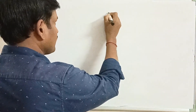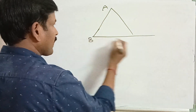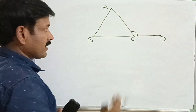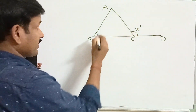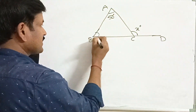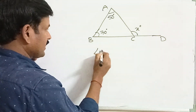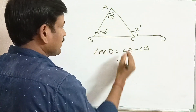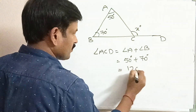Now let us discuss some problems using the exterior angle property of a triangle. In triangle ABC, side BC is produced, forming an exterior angle ACD. Let angle ACD be x degrees. Angle A measures 50 degrees and angle B measures 70 degrees. Find the measure of exterior angle ACD. By the exterior angle property, angle ACD equals angle A plus angle B, which is 50 plus 70, equaling 120 degrees.